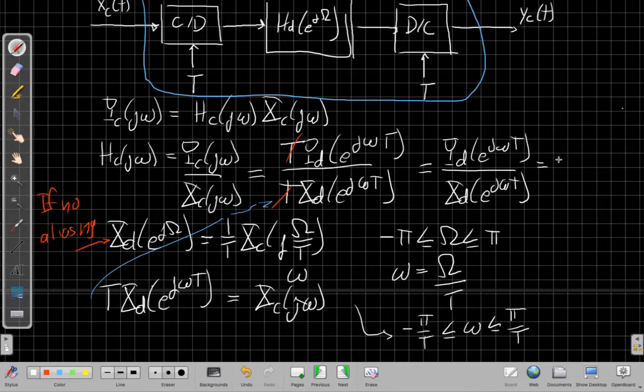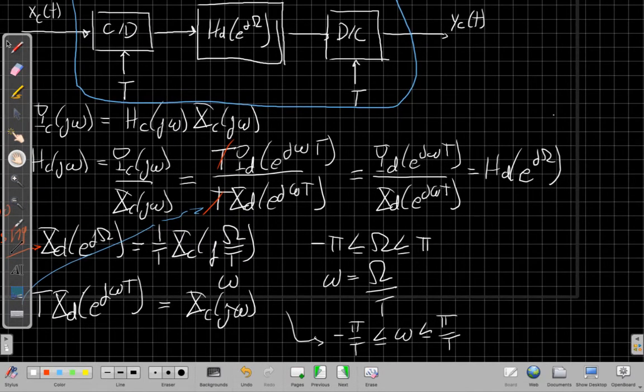Is the discrete time Fourier transform at big Ω·T divided by the input discrete time Fourier transform. When we say Yd over Xd, this is just the discrete time filter evaluated with its frequency equal to ω·T.